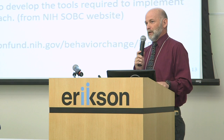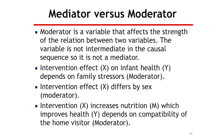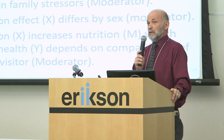We also have the notion of mediator versus moderator, especially when talking about precision studies and how things differ across people. A moderator affects the strength of the relation between two variables — it's not in an intermediate causal sequence. It's a case where the relation between X and Y differs across levels of a third variable that is not in a causal sequence. Examples: intervention effect on infant health depends on family stressors; intervention effect differs by gender; intervention increases nutrition which improves health, but depends on compatibility of the home visitor.